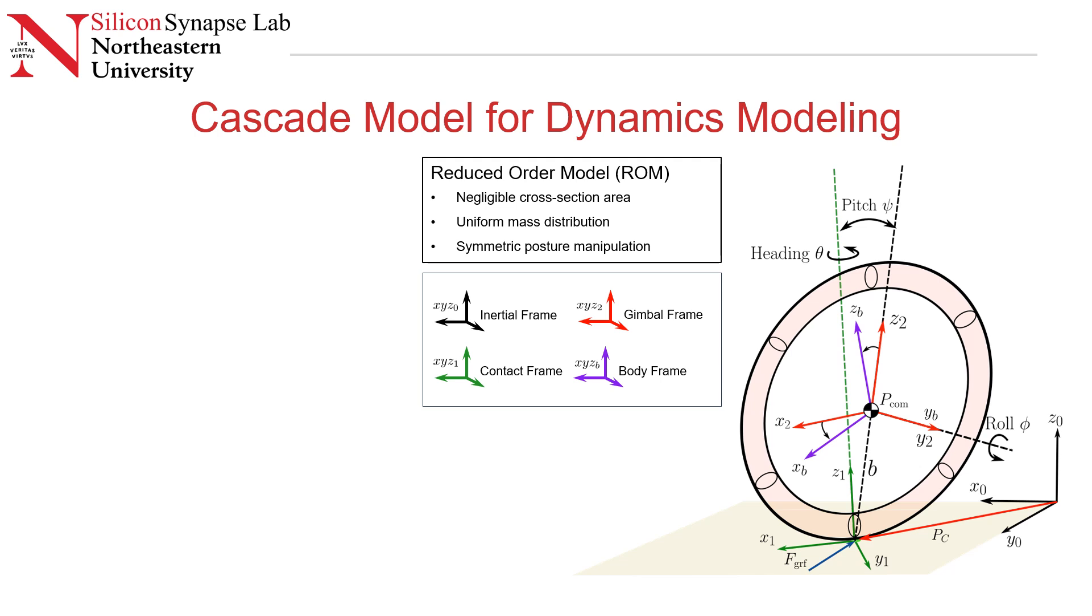We model Cobra using this reduced order model. We model it as a line mass arranged in an elliptical ring. We make the assumption that the cross section of this ring is negligible, and that the mass is distributed uniformly throughout, which puts the center of mass at the center of this elliptical ring. For actuation and posture manipulation, we consider symmetric posture manipulation such that the center of mass is always aligned with the center of the elliptical ring.